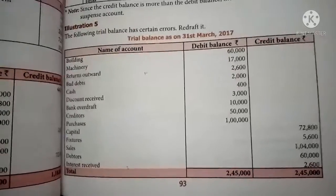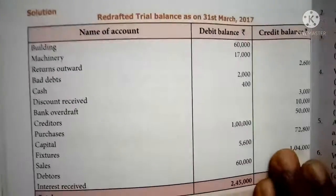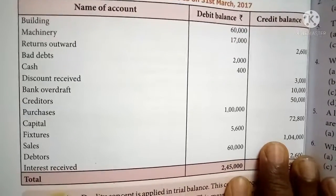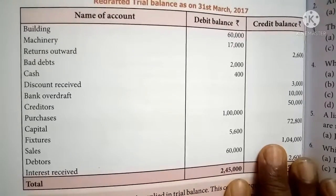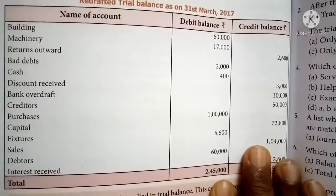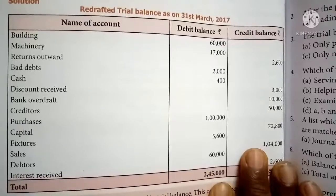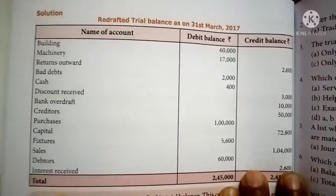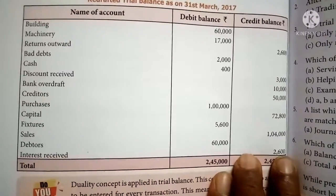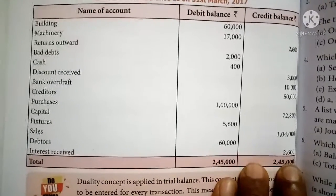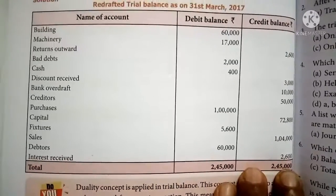So you can redraft the trial balance once again. Write the heading — Trial Balance as on 31st March 2017 — and make the necessary columns: building debit, machinery debit, return outwards credit, bad debts debit, cash debit, discount received credit, bank overdraft credit, creditors credit, purchases debit, capital credit, fixtures debit, sales credit, debtors debit, and interest received credit. Write all the information in the correct column, then re-total the debit column and credit column separately. The total is 2,45,000 on both sides — there is no difference between debit balance and credit balance, and automatically the trial balance is tallied.